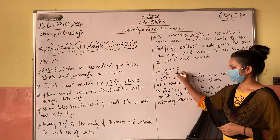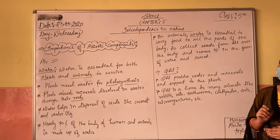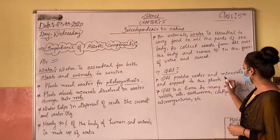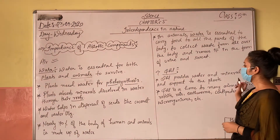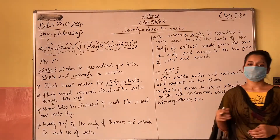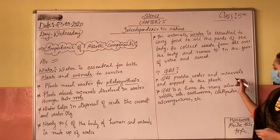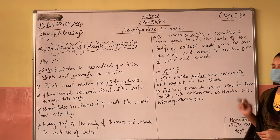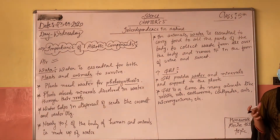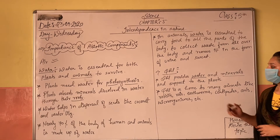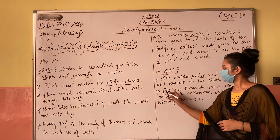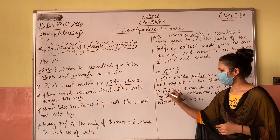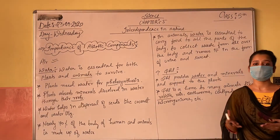Next is soil. Soil provides water, minerals, and support to plants. Because plants grow in soil, they obtain these resources from it. Soil is also a home to many animals like rabbits.